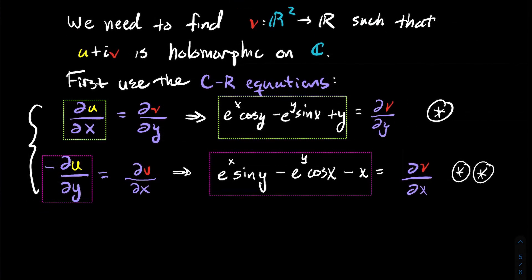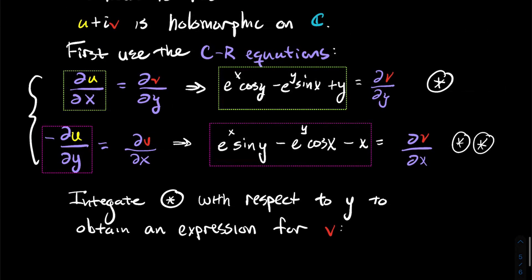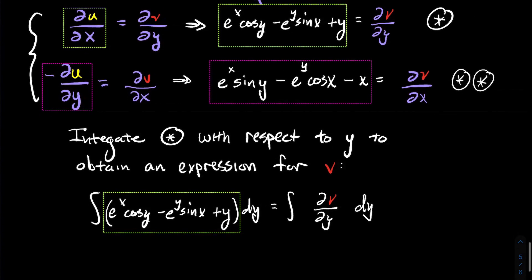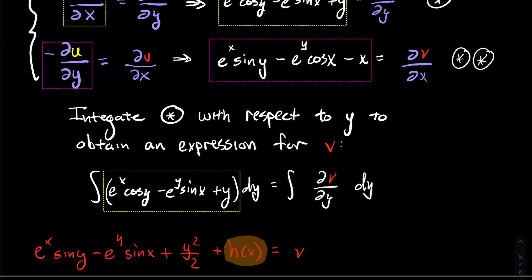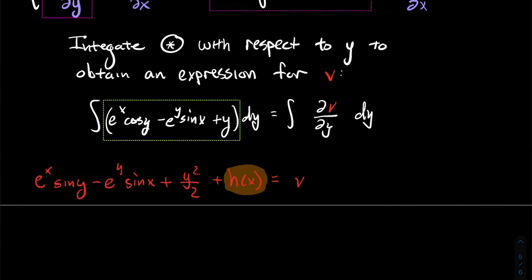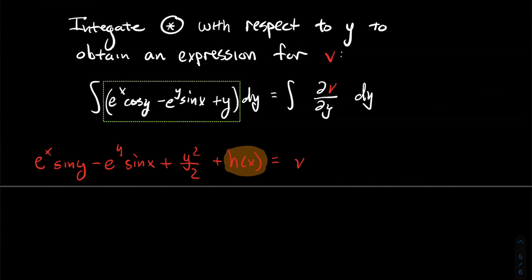So we've obtained expressions for what the partials of V look like. Now we pick one of these equations to work with — if I integrate equation star with respect to y, then the right-hand side should just be V. Taking the integral of both sides of equation star with respect to y: on the left side it's not too hard to integrate those terms, except at the very end, when integrating with respect to y, instead of plus C you get plus h(x), since any function of just x is constant with respect to y. On the right side we just get V.